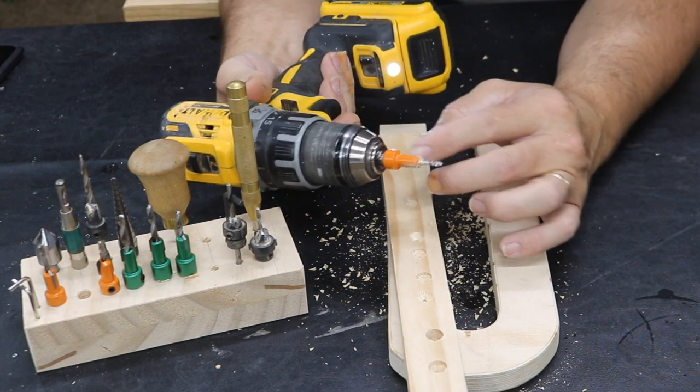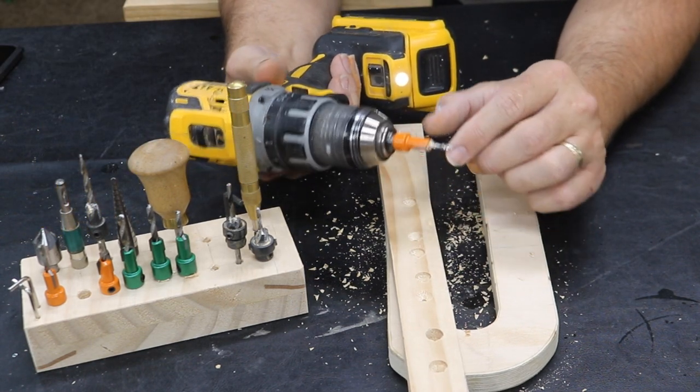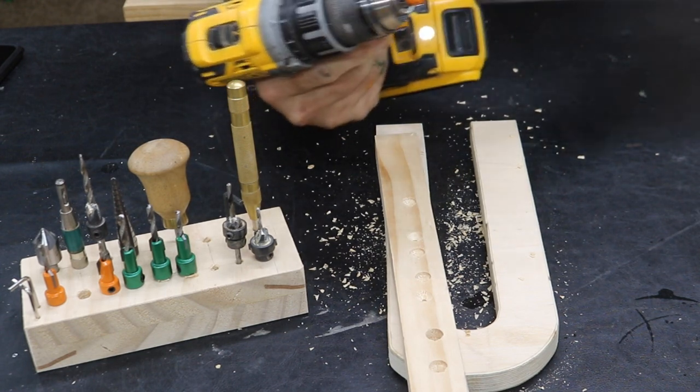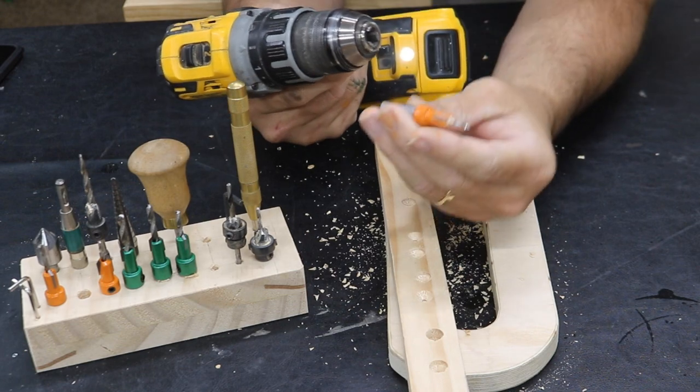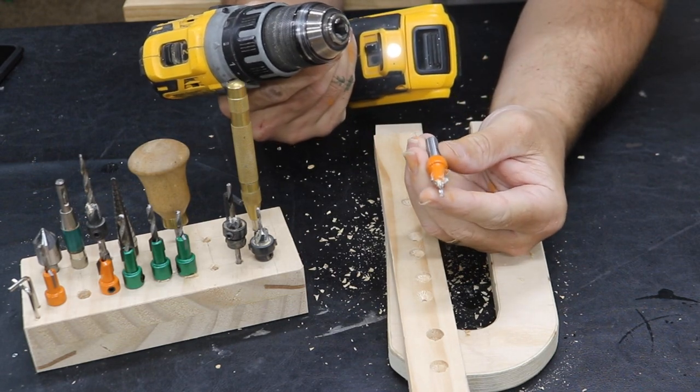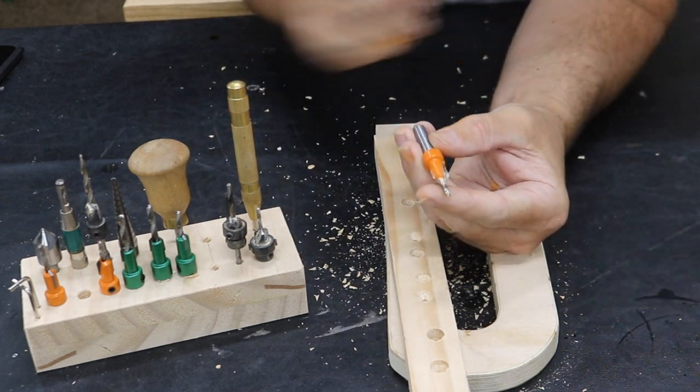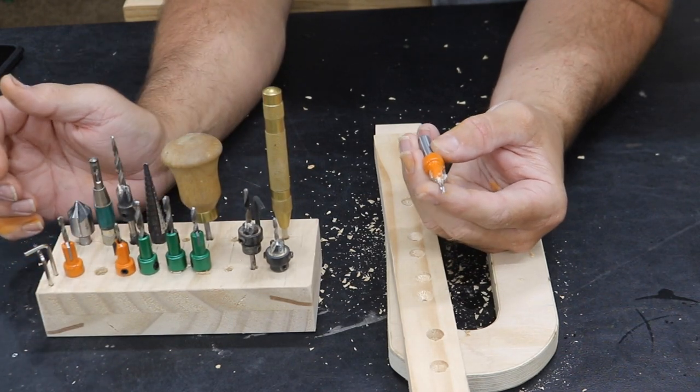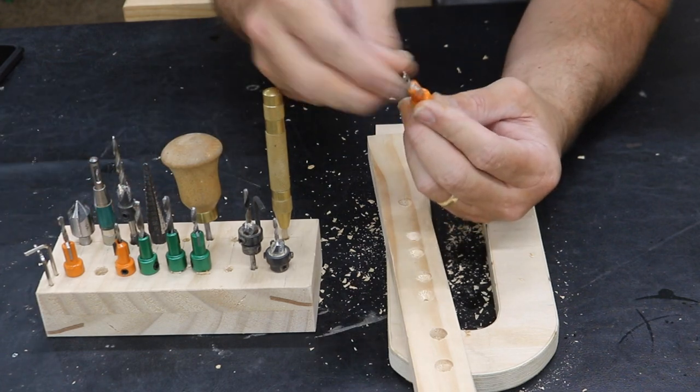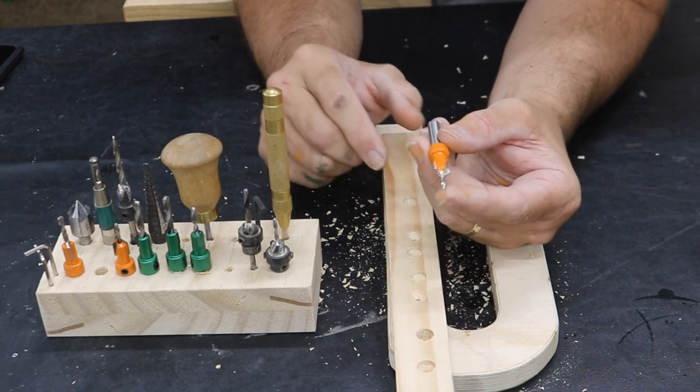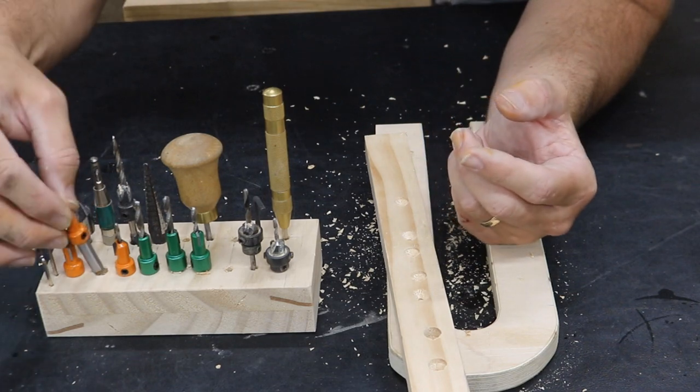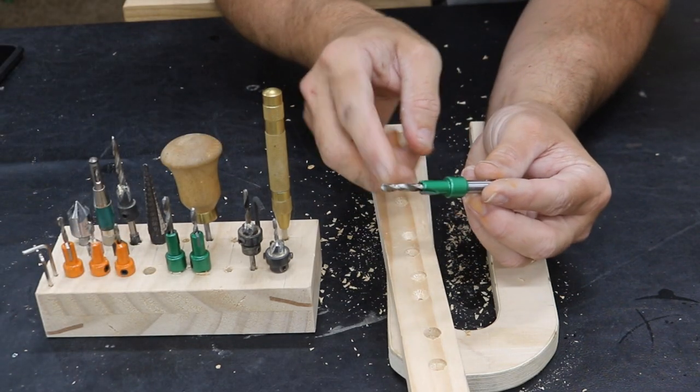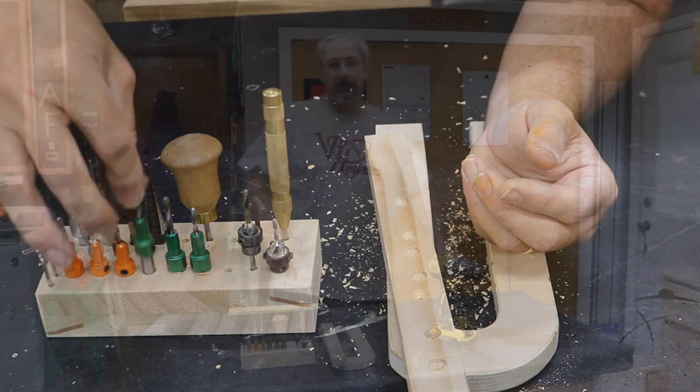So I thought I'd share those with you. I'll put a link in the description for these particular countersink bits. For both sets, I spent less than $20. And that's pretty decent for getting six countersink bits. Now if it was me, I would probably buy two orange sets instead of the orange and the green. And that will probably do most of your real woodworking in most applications. But if you do need the bigger drill bit countersinks, get the green ones.